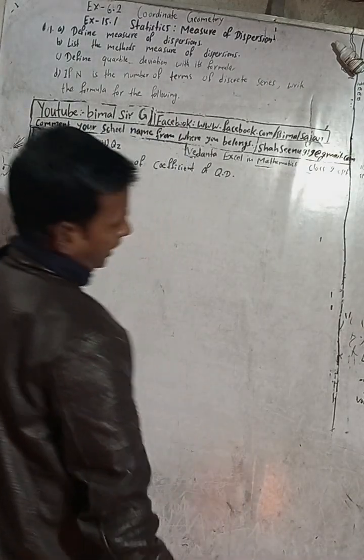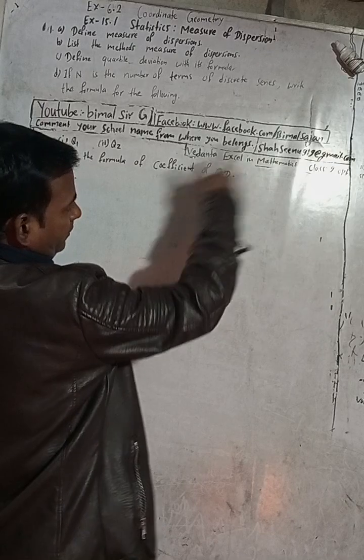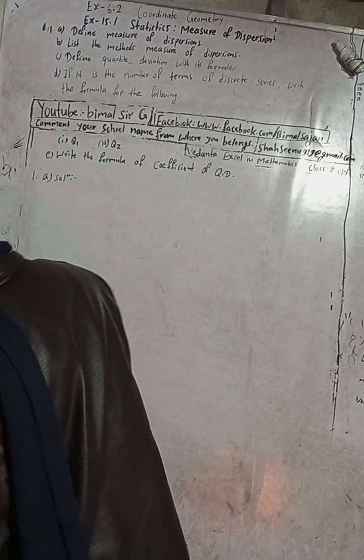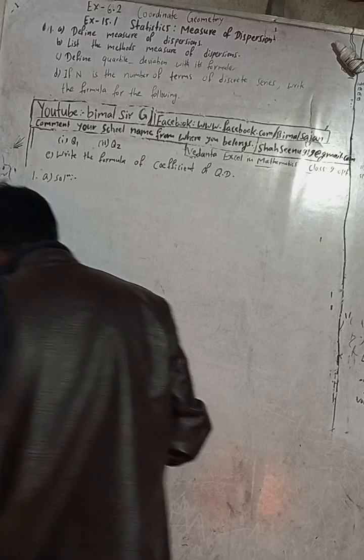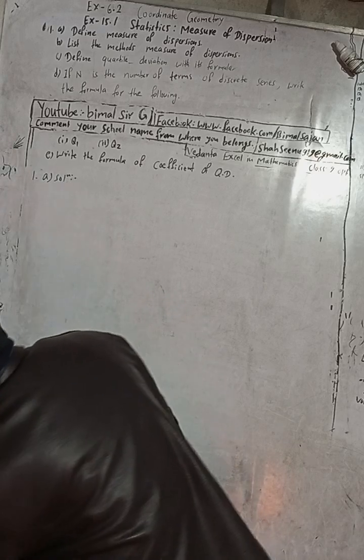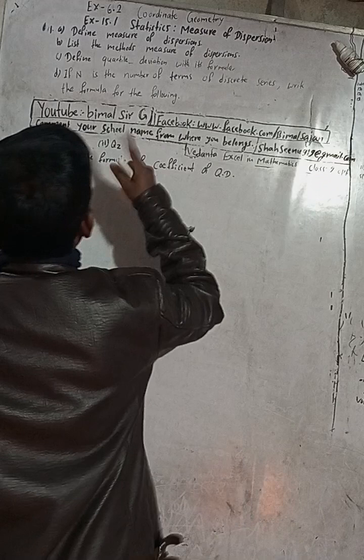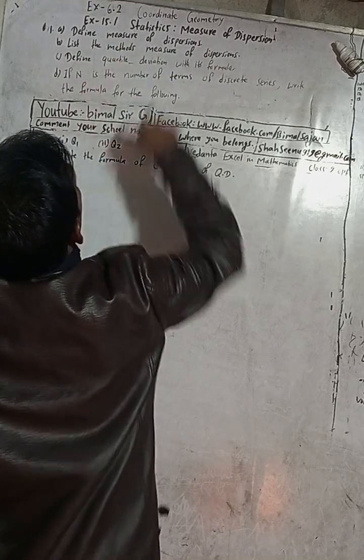Here you can see question number one, exercise 15.1 — Statistics: Measure of Dispersion — from Vedant Excel in Optional Mathematics, Class 9. There are five questions here, and I will try to solve all of them one by one in the same video. Number one: define measure of dispersions.